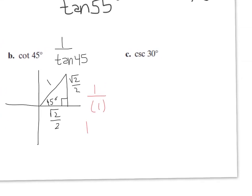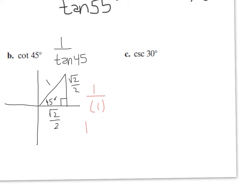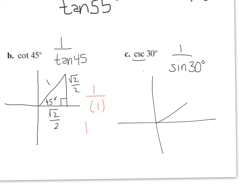And the cosecant matches up with sine. So you're doing 1 over the sine of 30. Sine of 30 is in the first quadrant — the short side is 1 half and the long side is root 3 over 2. The y value is 1 half, so 1 divided by 1 half is 2. It's positive 2.